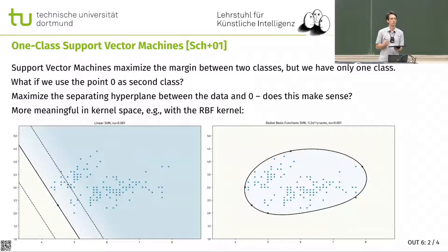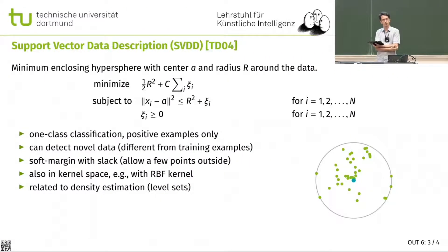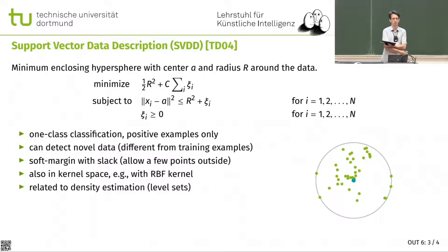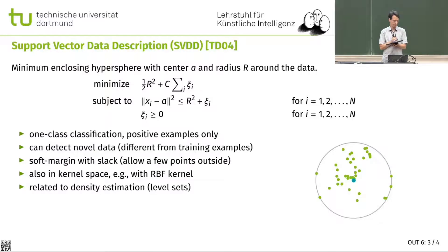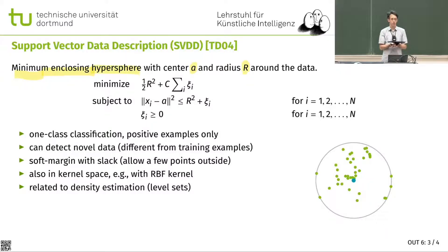It does not make sense to use this with a linear kernel. This was later refined in a way that is usually considered more meaningful, because it loses this special notion of the point 0,0 that exists in the RBF kernel — it works there, but with other kernels it doesn't. We can do what is called the support vector data description, SVDD. And we want to find the minimum enclosing hypersphere around some center A, with some radius R surrounding my data — the minimum enclosing ball.